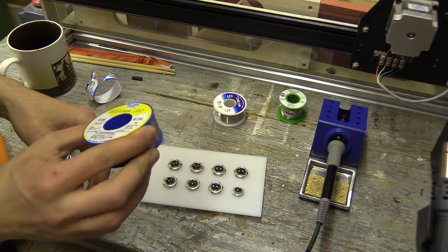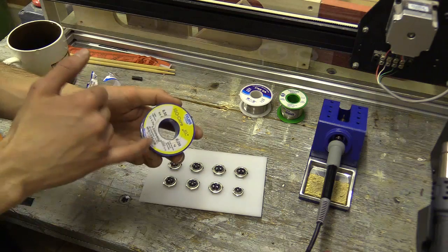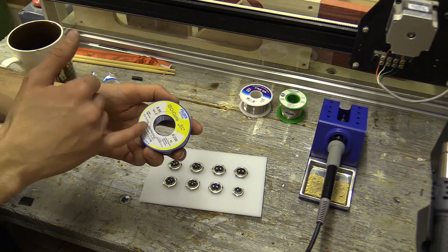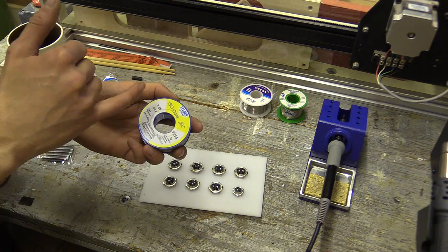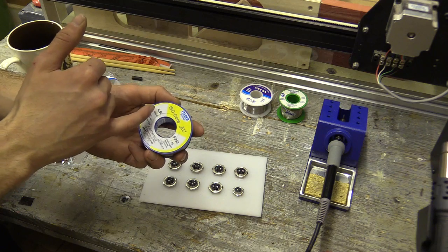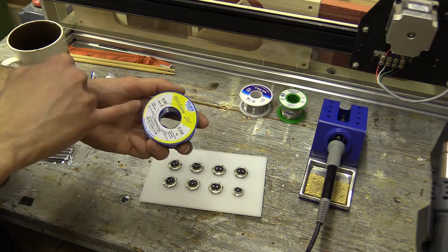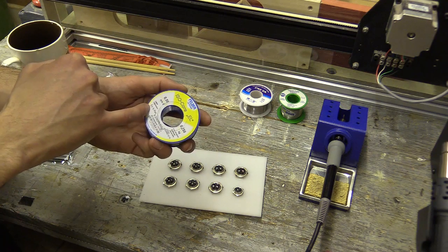This stuff here from Felder was very expensive, this cost me 23 quid. This stuff has 2% silver as well as lead, and it's also narrower, 0.5mm, and it has a lot more flux, 3.5%.